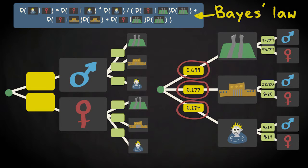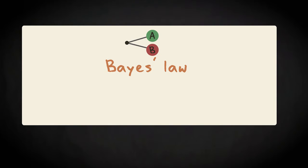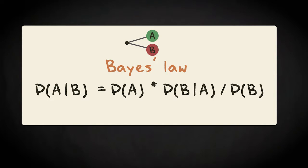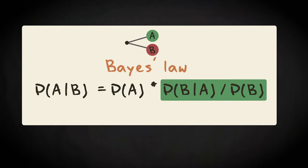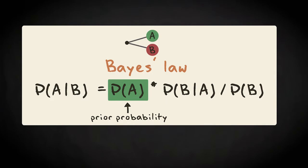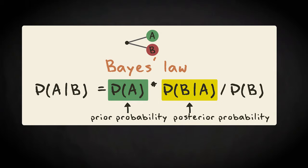In simple discrete probability calculations, Bayes' law is a convenient function which follows from the axioms of probability calculus. However, it is often interpreted in a more abstract way, where the left-hand side of the equation is understood as a degree of belief in a hypothesis A after observing B, and the right-hand side gives the belief in A prior to knowing B times the support that B provides for A. In this context, the probability of A is called prior probability, and the conditional probability of A given B is called posterior probability.